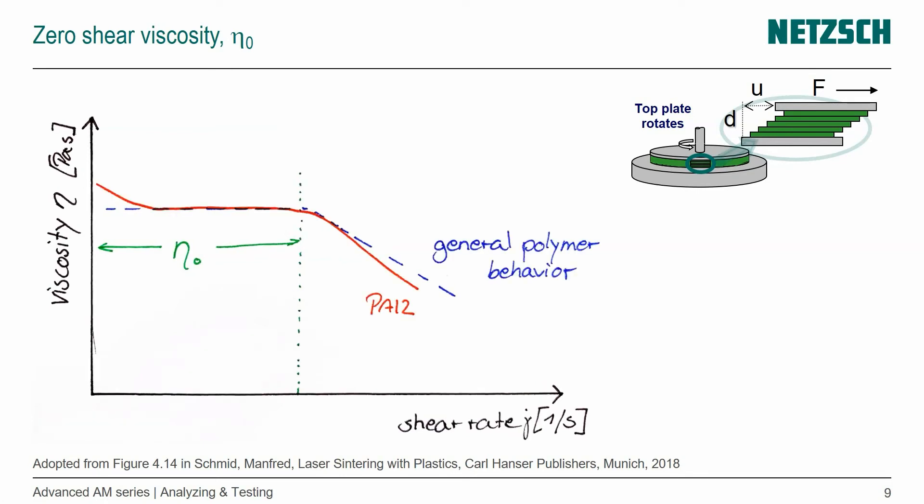When we look now at the behavior of our Nylon 12, we see that we also have that typical zero shear plateau and then shear rate dependence. It's not really interesting for us because we don't reach these shear rates. But it's also something that we see at very low shear rates, that the viscosity is slightly higher.